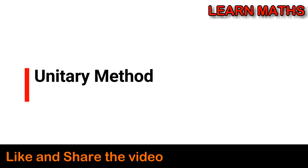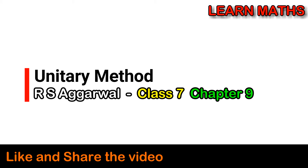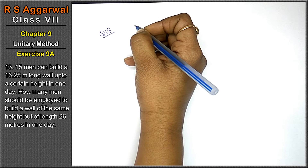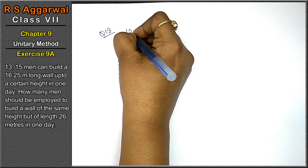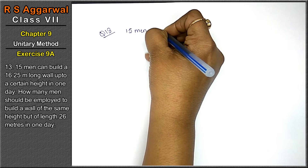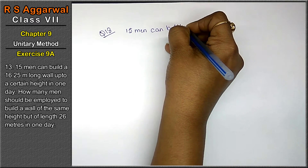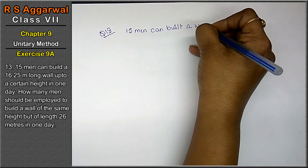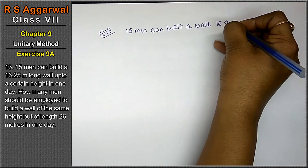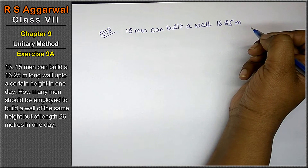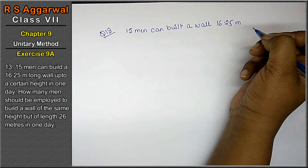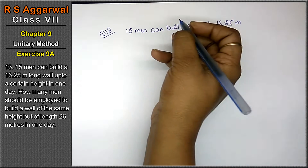Let's do question number 13 of Unitary Method exercise 9a. Question number 13 is: 15 men can build a wall of 16.25 meters in one day. How many men should be employed to build a wall of the same height but of length 26 meters?